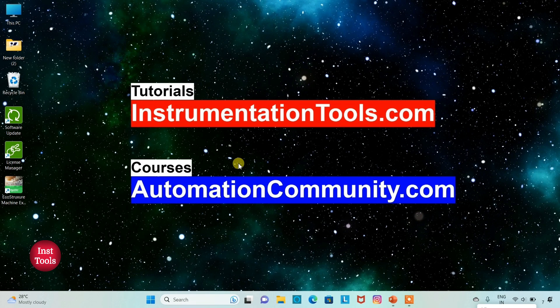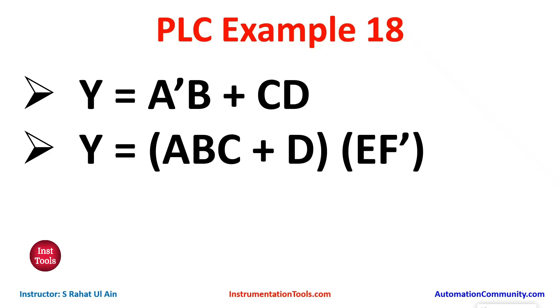Hello friends. Welcome to Automation Community. Today in this video, we will be developing ladder logic from Boolean expressions. Let's look at the example first. Example 18: Y is equal to A-not-B plus CD, and then Y is equal to ABC plus D into EF-not. We will start with the first one, that is Y is equal to A-not-B plus CD.